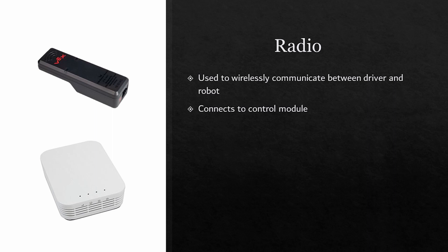Radios are often the greatest source of problems when attempting to control the robot on the field, especially when the robot gets disconnected. The top radio is the VEX V5 robot radio. The bottom radio is the FRC robot radio. Radios are standardized for every robot in a competition, as they need to be connected to the field control system itself.